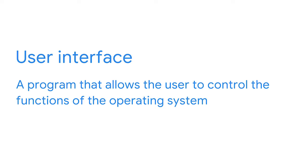Now that you've learned the inner workings of computers, let's discuss how users and operating systems communicate with each other. The user communicates with the operating system via an interface. A user interface is a program that allows the user to control the functions of the operating system. Two user interfaces we'll discuss are the graphical user interface, or GUI, and the command line interface, or CLI.